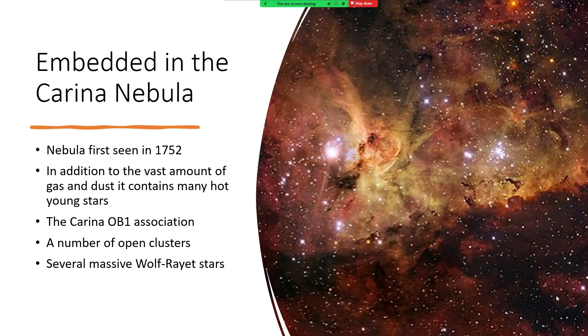Wolf-Rayet stars are so powerful and so massive they tend to blow away all of their outer envelope, depleting them of hydrogen so that their spectrum looks very peculiar. You see the inner helium that's already built inside a shell.